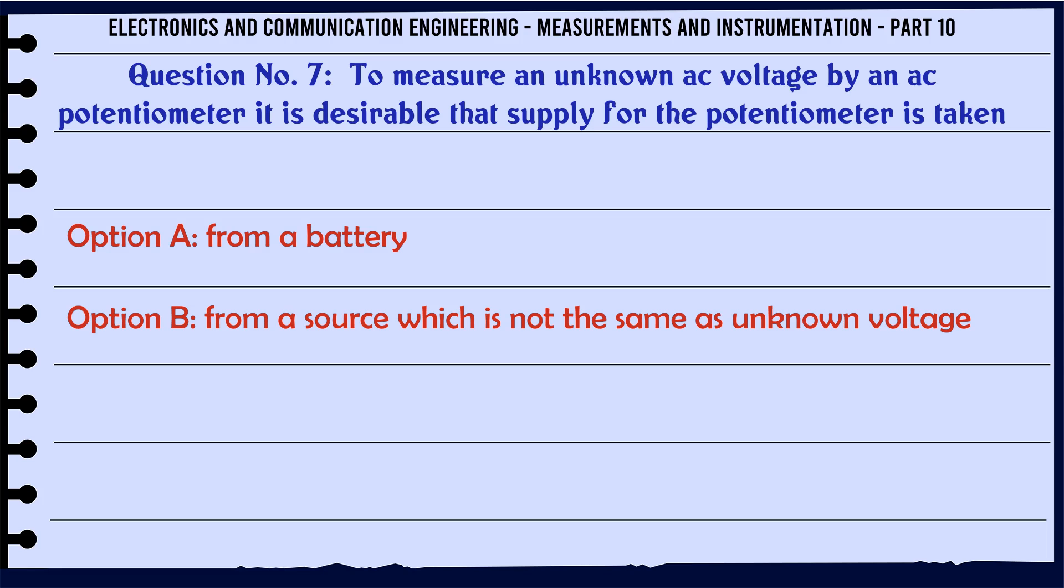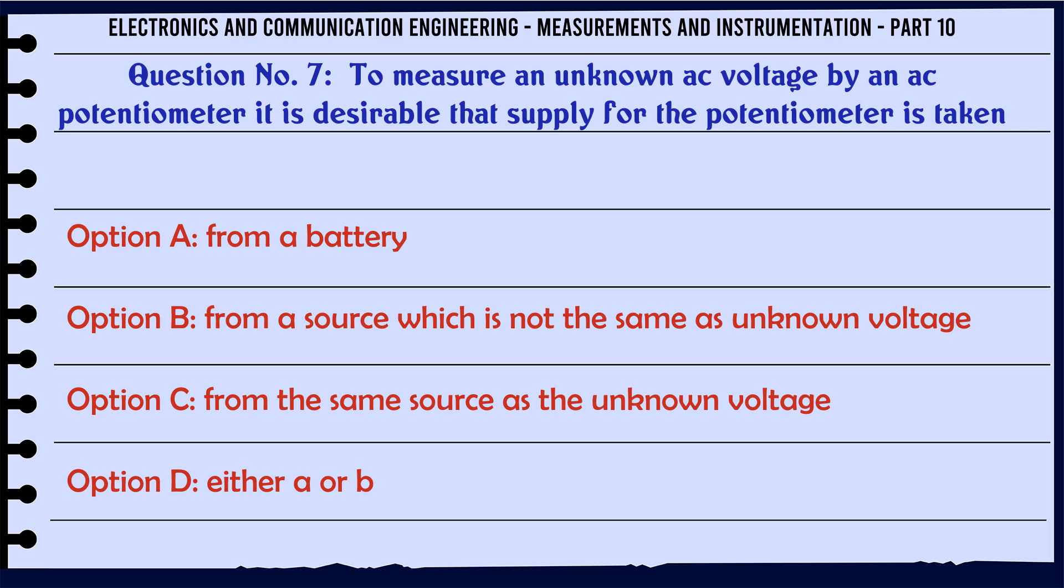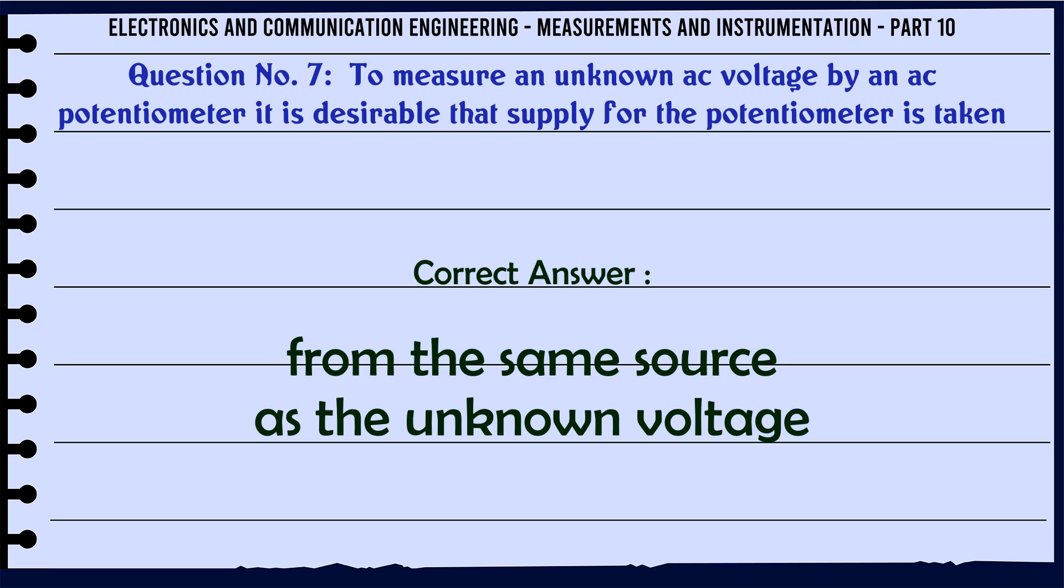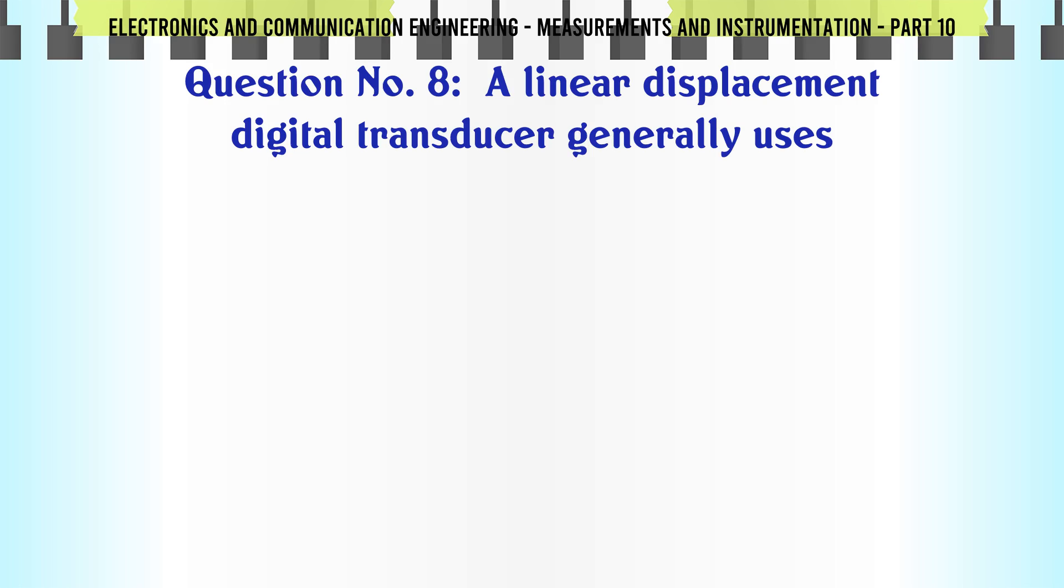To measure an unknown AC voltage by an AC potentiometer, it is desirable that supply for the potentiometer is taken: A) from a battery, B) from a source which is not the same as unknown voltage, C) from the same source as the unknown voltage, D) either A or B. The correct answer is from the same source as the unknown voltage.